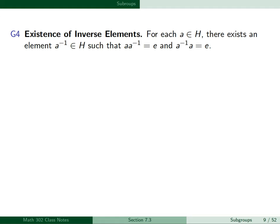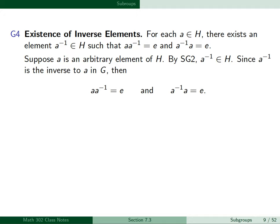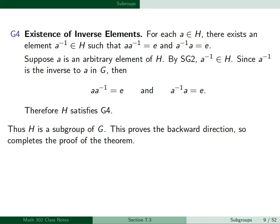For G4, existence of inverse elements: for each A in H, there exists A-inverse in H such that A times A-inverse equals E and A-inverse times A equals E. Suppose A is an arbitrary element of H. By SG2, A-inverse belongs to H. Since A-inverse is the inverse of A in G, A times A-inverse equals E and A-inverse times A equals E. Therefore H satisfies G4, H is a subgroup of G, completing the proof.